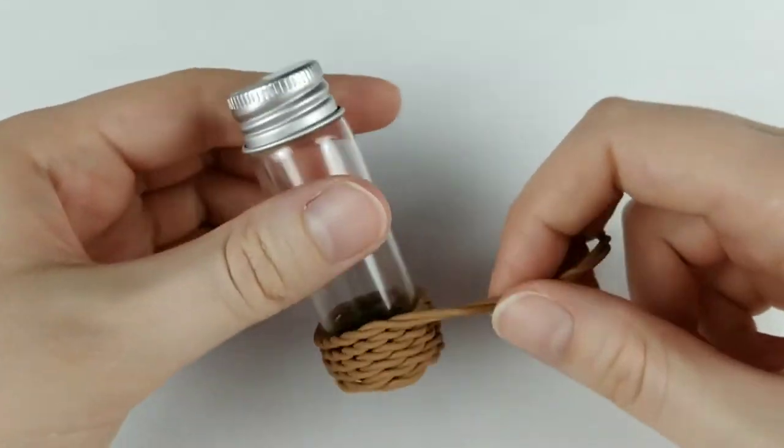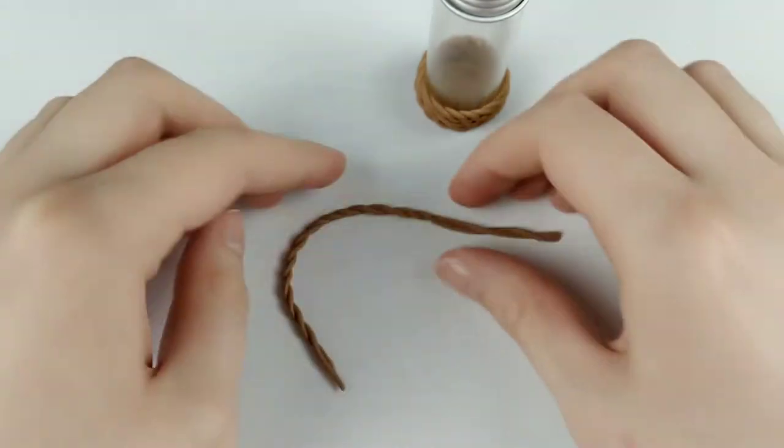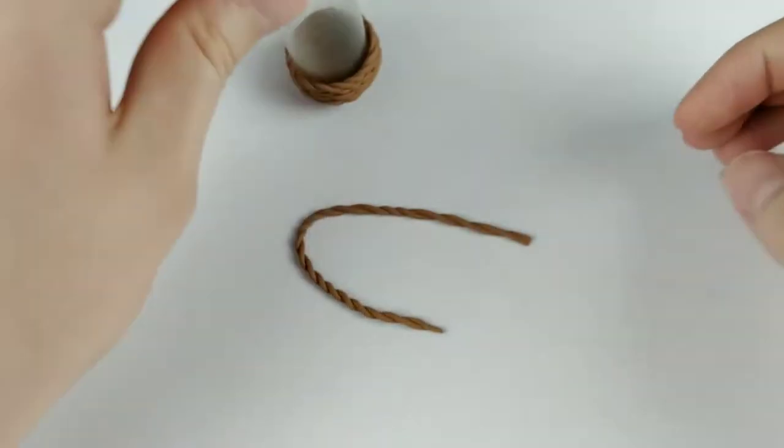Once you have it started it shouldn't be too hard to continue and with the extra piece I cut off I'm going to turn that into the basket handle, just making sure that I have it at the right height and cutting it at the length I want.